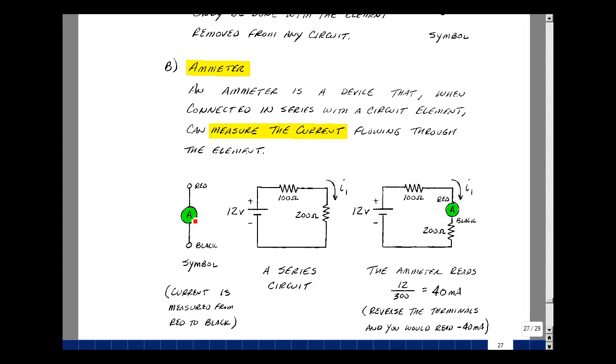We'll again use a circle but with an A inside of it. Because current has a direction, the red terminal and the black terminal have a meaning. This is typically the plus and the minus terminal. Current flowing from the red to the black would appear on the meter as a positive number. If it were flowing the other way it would appear as a negative number.